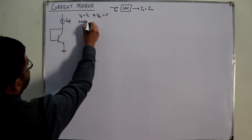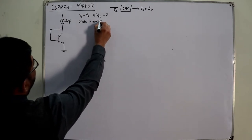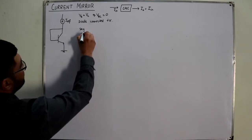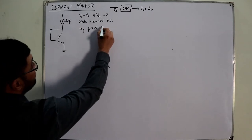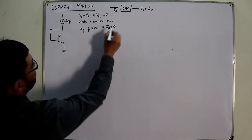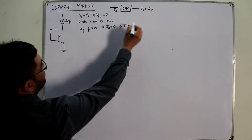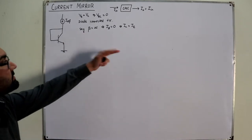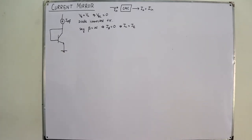This transistor configuration — with base and collector shorted — is known as a diode-connected transistor. I've already discussed the BJT used as a diode. Now, if we assume beta is infinitely large, this implies the base current IB is zero. If IB equals zero, the collector current equals the emitter current. Since the emitter current is the sum of the base and collector currents, with IB zero, the emitter current equals the collector current.